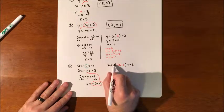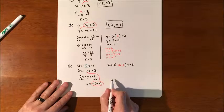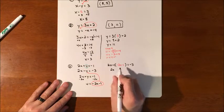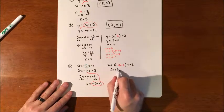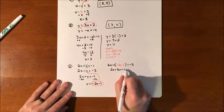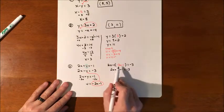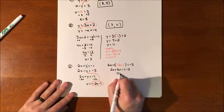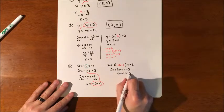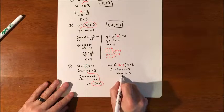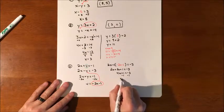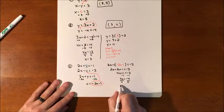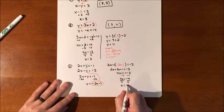We take care of the parentheses by distributing a negative — or think of it as distributing a negative 1 to each piece — which changes their signs. So we have 2x plus 2x plus 1 equals negative 3. Combining like terms gives 4x plus 1 equals negative 3. Subtracting 1 from both sides: 4x equals negative 4. Dividing by 4, x equals negative 1.